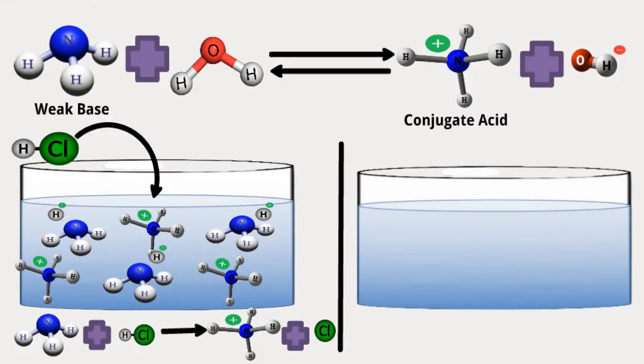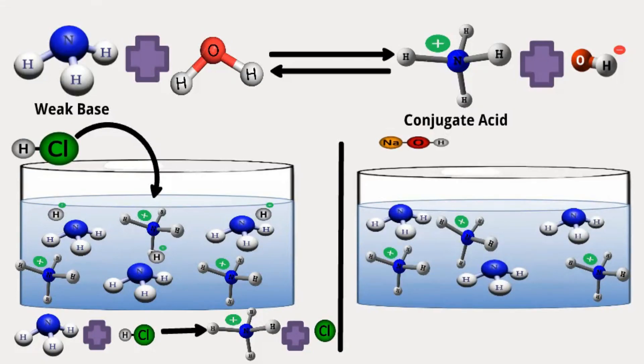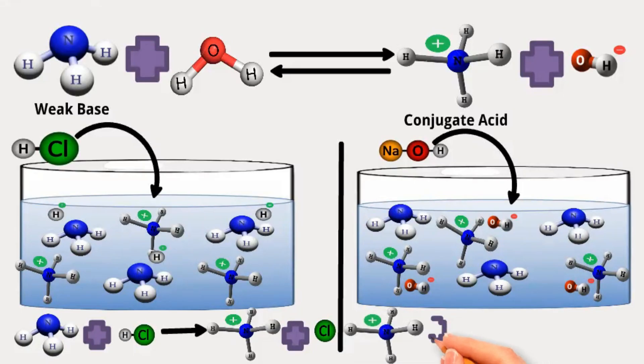Suppose you add sodium hydroxide, a strong base. In that case, it interacts with ammonium ions to form ammonia, which is a weak base, and water molecules. So, the ammonia and ammonium ion buffer system can resist changes in pH. It achieves this by utilizing the reversible reactions of ammonia and ammonium ions, effectively neutralizing added acids or bases and maintaining a relatively stable pH.